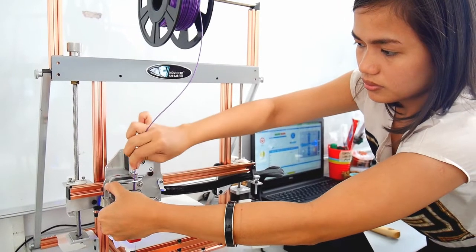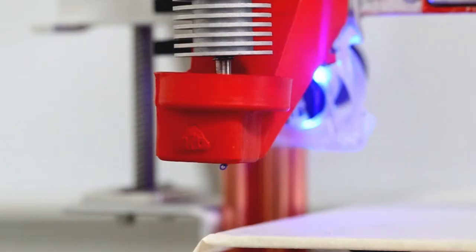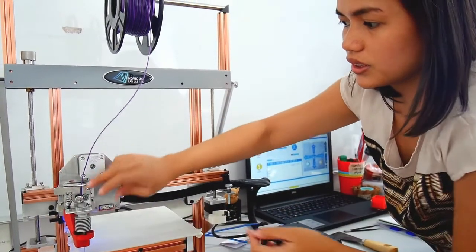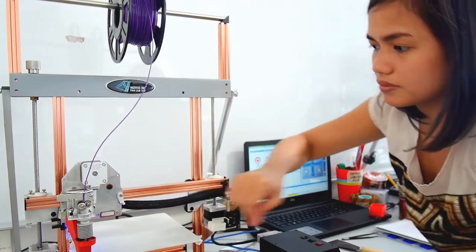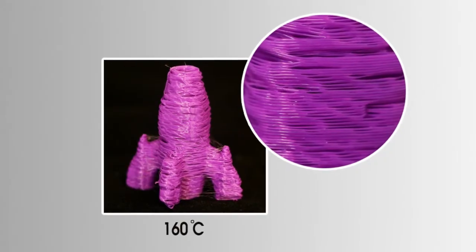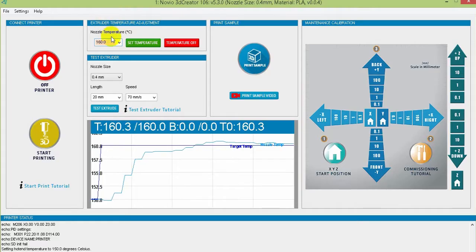Push through the print material until it manually extrudes from the nozzle. Repeat the process until the nozzle successfully extrudes the print material manually.